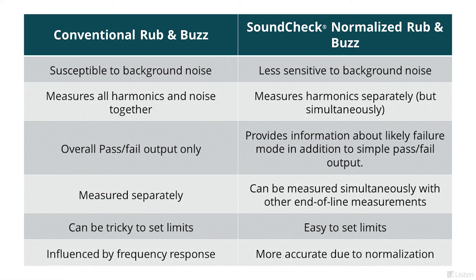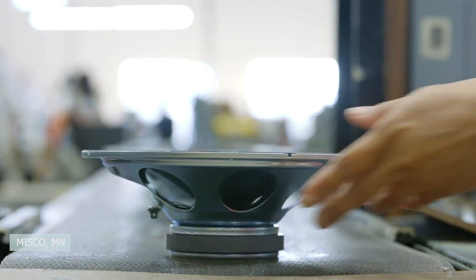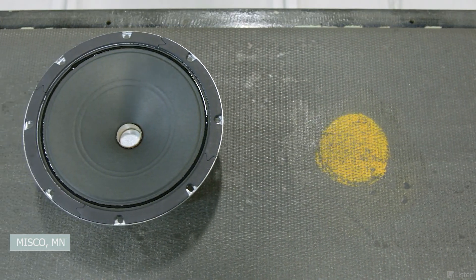While the main objective of rub and buzz detection is to identify faulty sounding speakers, the individual harmonic analysis offered by Soundcheck's algorithms makes them also valuable for continually monitoring production line performance for any drift in characteristics that could lead to product failure with customers. Although these methods are now 25 years old, they still outperform all other methods for measuring higher-order harmonic distortion on the production line. More details on these unique algorithms can be found in the published paper section of Listen's website.